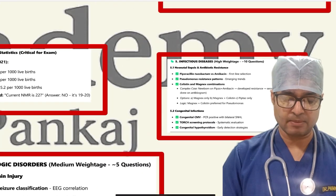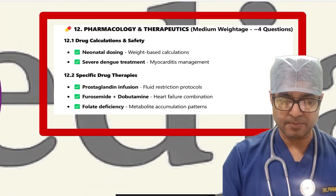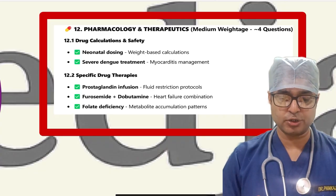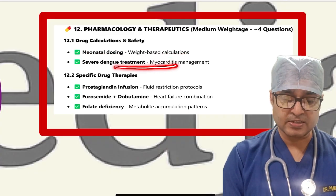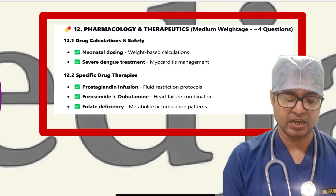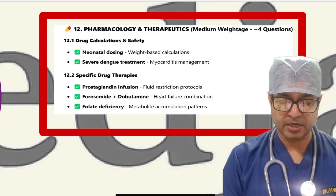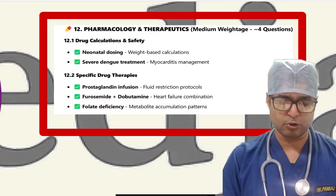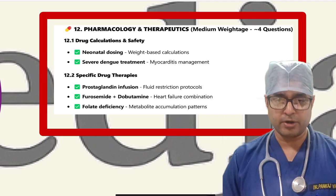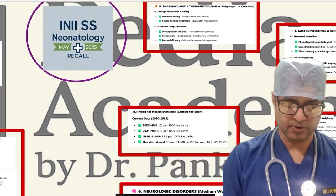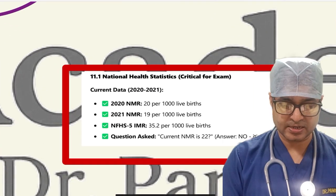In pharmacology for neonatology, topics included neonatal dosing and weight-based calculation, severe dengue treatment, specific drug therapy like prostaglandin infusions, furosemide plus dobutamine heart failure combination. Folate deficiency and metabolic accumulation patterns with folate and B12 deficiency were also asked.